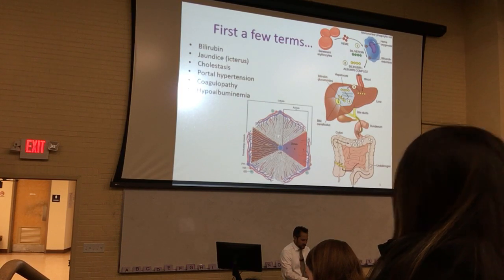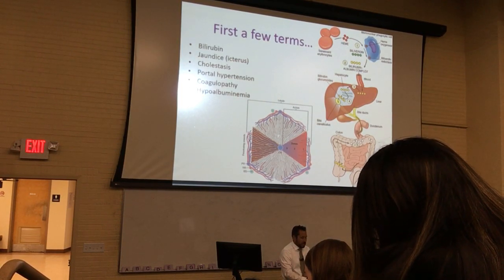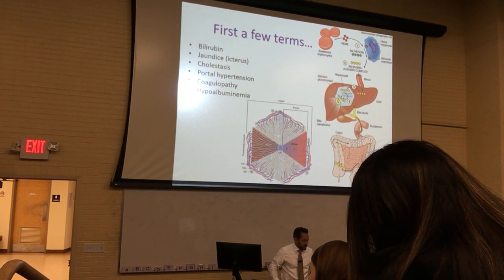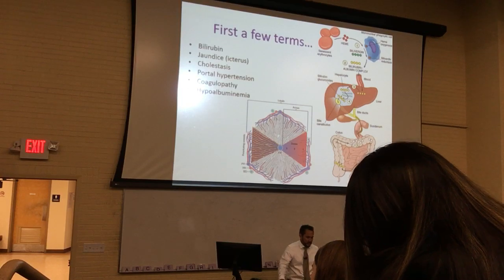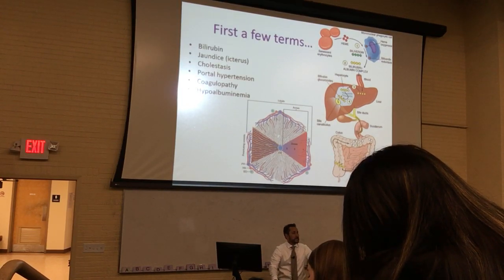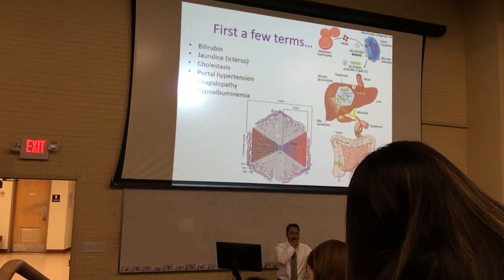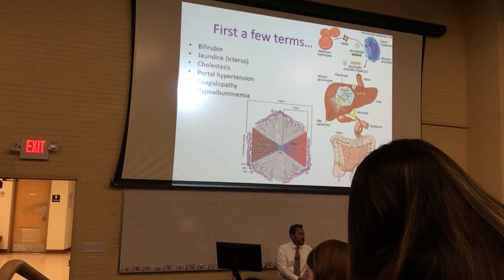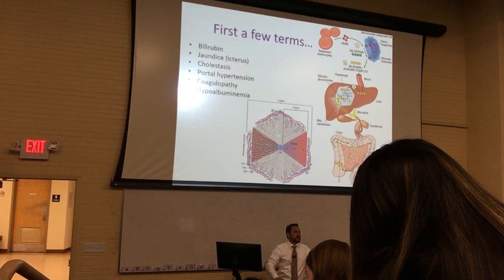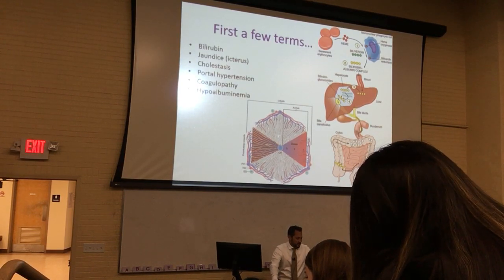Cholestasis is visible bilirubin pigment in the canaliculi and the hepatocytes because bile flow is blocked. This happens unfortunately in a lot of patients who wrestle with cancer of the liver.